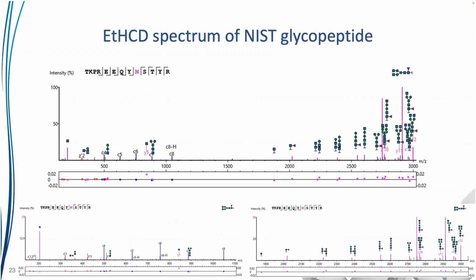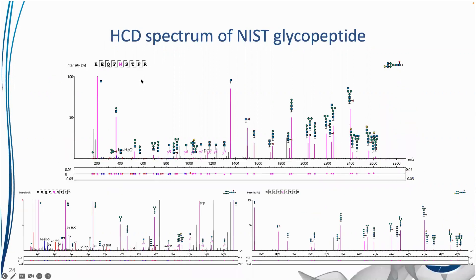Here's what a typical glycopeptide spectrum looks like within GlycanFinder. In the lower m/z range for the ETHCD data, we see a series of C and Z ions supporting the peptide sequence, and in the higher m/z range, glycan fragmentation ions are visible with glycan structures annotated above each peak. For the HCD data, we have a nice B and Y ion series supporting the peptide sequence, and with more abundant glycans, it also does a fairly good job at fragmenting the glycan.